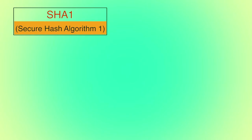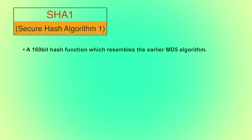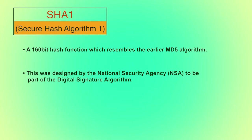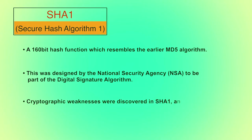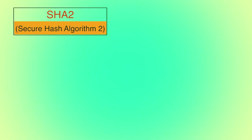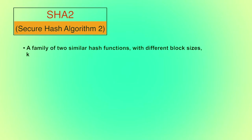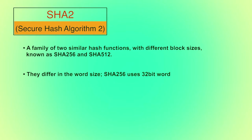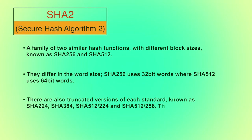SHA-1, Secure Hash Algorithm 1, was discovered after the collision attack problem in MD5. It generates a 160-bit hash value and was designed by the NSA to be part of the digital signature algorithm. Some cryptographic weaknesses were discovered in SHA-1, and the standard was no longer approved for most cryptographic uses after 2010. SHA-2, Secure Hash Algorithm 2, is a family of two similar hash functions with different block sizes known as SHA-256 and SHA-512. SHA-256 uses 32-bit words while SHA-512 uses 64-bit words. There are also truncated versions: SHA-224, SHA-384, SHA-512/224. These were also designed by the NSA.